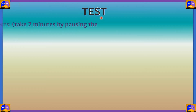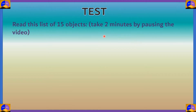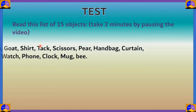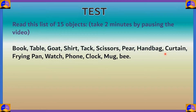In order to demonstrate its effectiveness, let's give you a test. In two minutes, read this list of 15 objects which will be shown in the video. You can pause the video to read and try to memorize it: book, table, goat, shirt, tack, scissors, pear, handbag, curtain, frying pan, watch, phone, clock, mug, and bee. Pause the video and take two minutes to try to memorize the whole list in order.